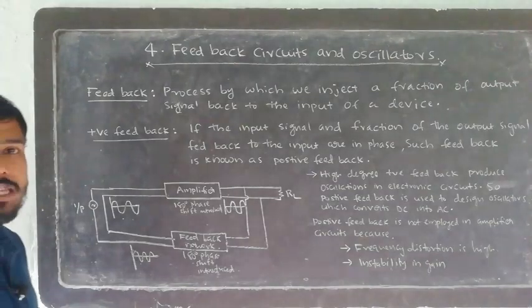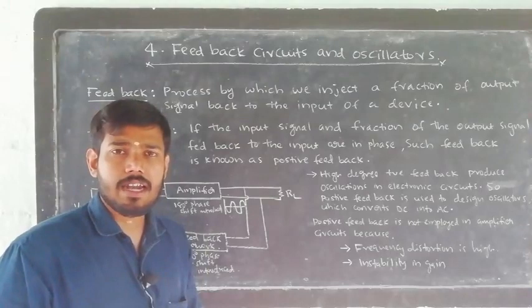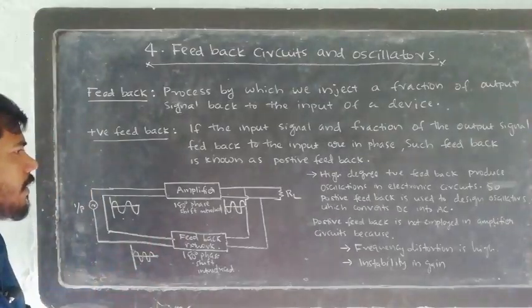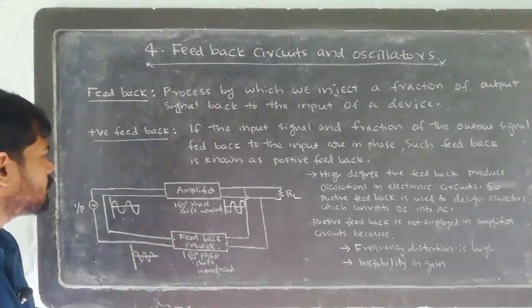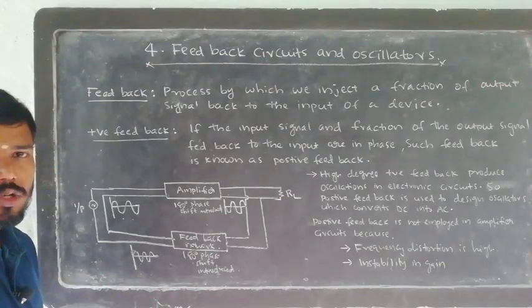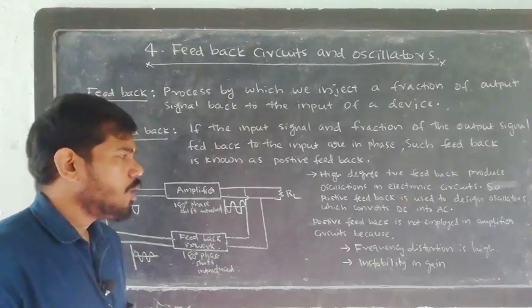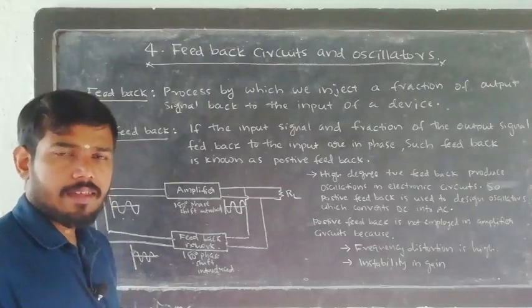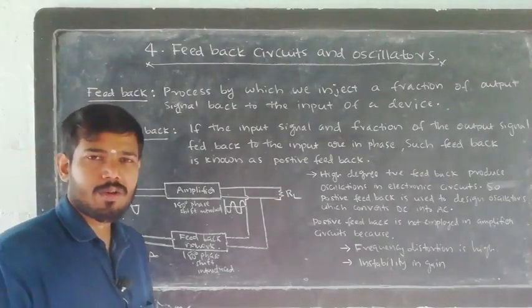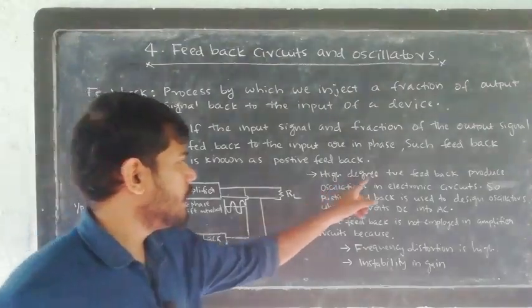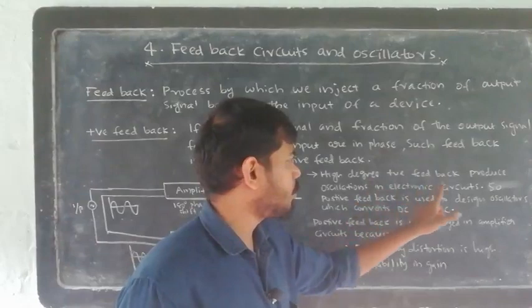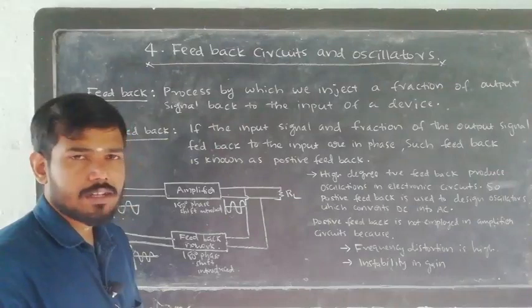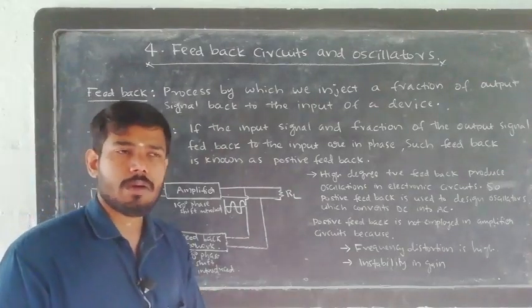Positive feedback is used in electronics for oscillators — devices and circuits that produce oscillations. When a high degree of positive feedback is applied, an amplifier circuit becomes an oscillator circuit, which gives oscillations. One amplifier circuit with one transistor and positive feedback becomes an oscillator circuit. A high degree of positive feedback in electronic circuits produces oscillations — these are called oscillator circuits.